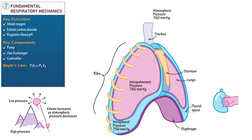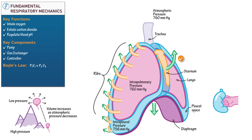First, let's illustrate the movement of the respiratory pump during inspiration. Draw an arrow pointing downward from the diaphragm to show that the diaphragm flattens and moves inferiorly as it contracts. Draw curved arrows pointing outward from the ribs to show that the outer ribs move laterally as the diaphragm contracts. Draw another curved arrow pointing outward from the sternum to show that the sternum moves in an anterior and superior direction as the external intercostal muscles contract.